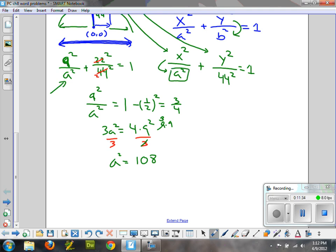A² is what belongs here. So the question is, what's the equation? I think we're done. We have x²/108 plus y²/44² = 1. Because a² is 108. Don't square it going in. That is the equation.